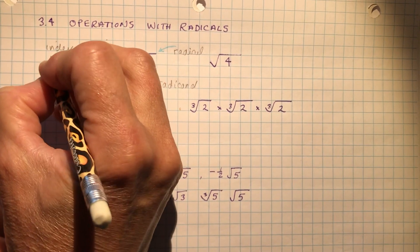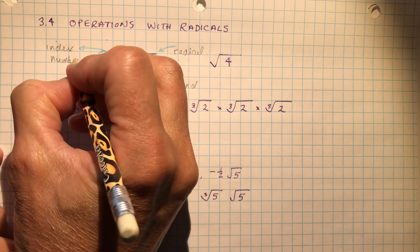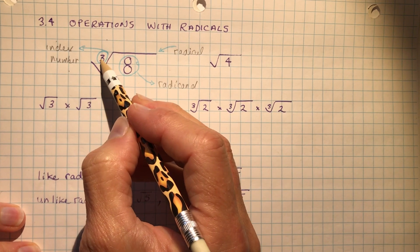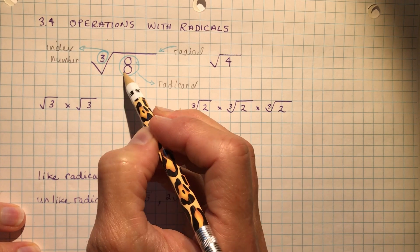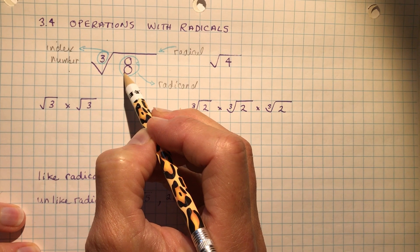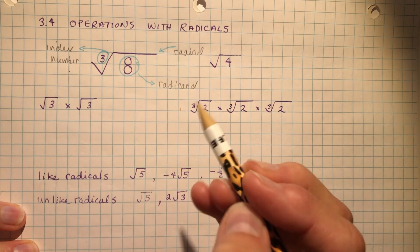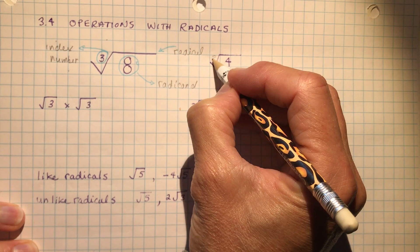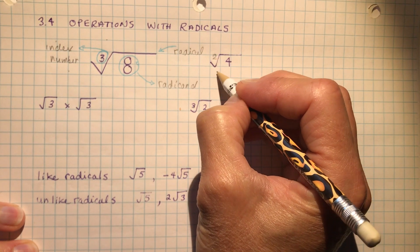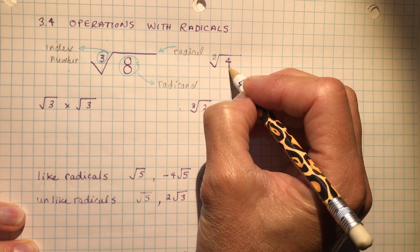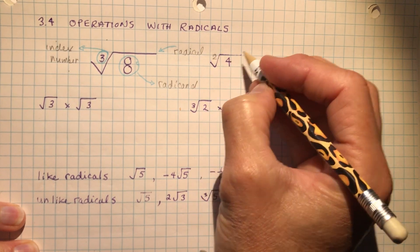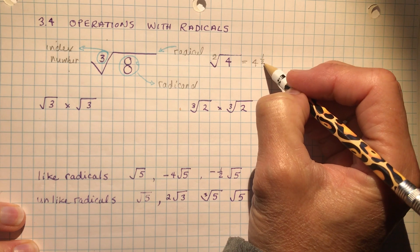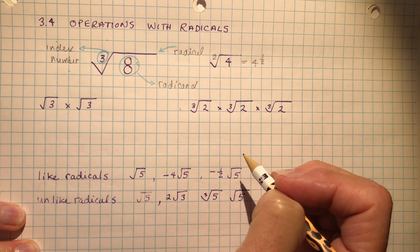The number in the little crook of the radical sign is called the index number. It tells you which root you're going to take. For this radical, I want the third root — the cubed root — of eight, which is two, because two times two times two gives me eight. If there is no index number, it's assumed to be two, meaning the square root, which is the same as the half power of the number.